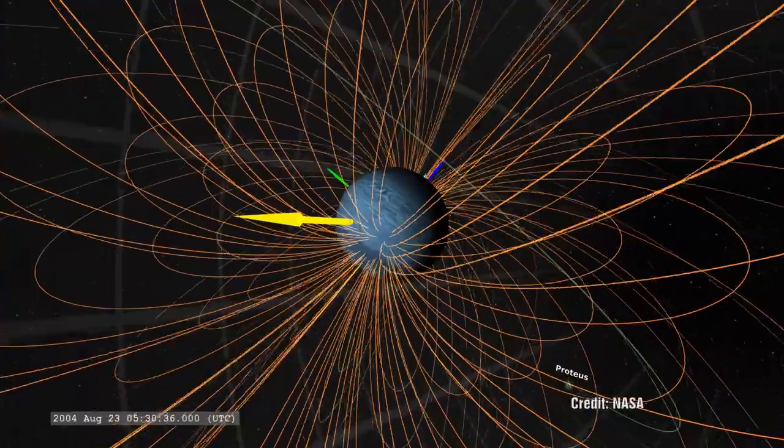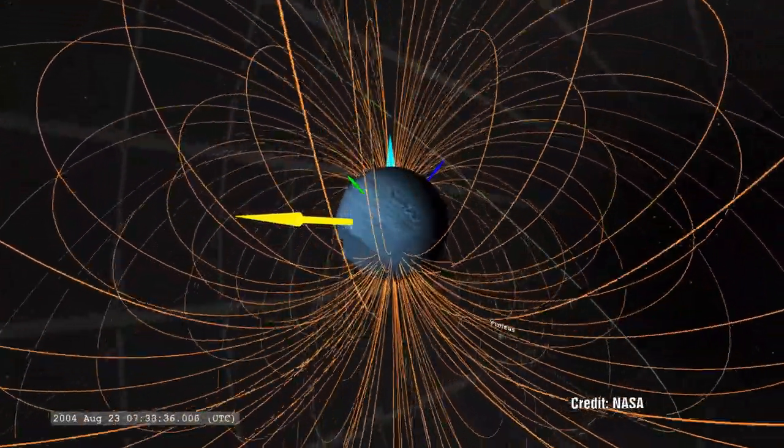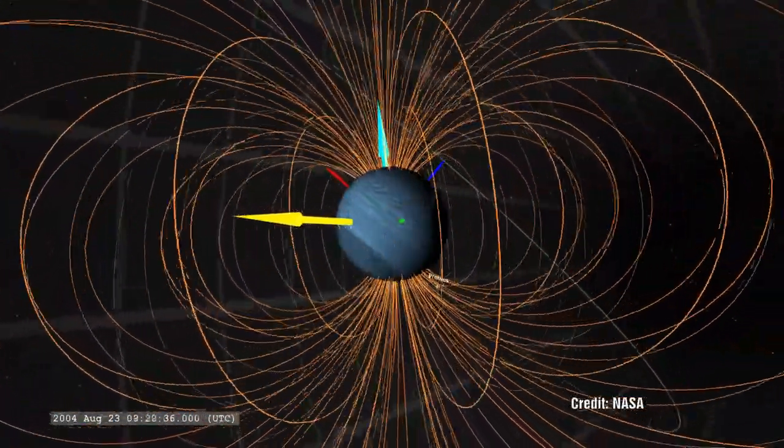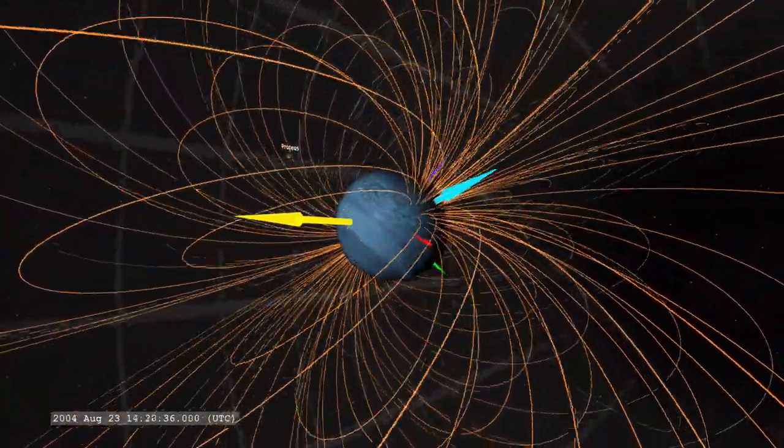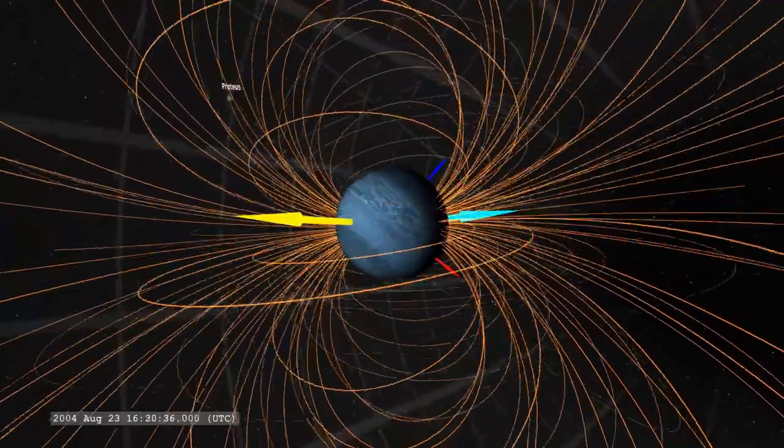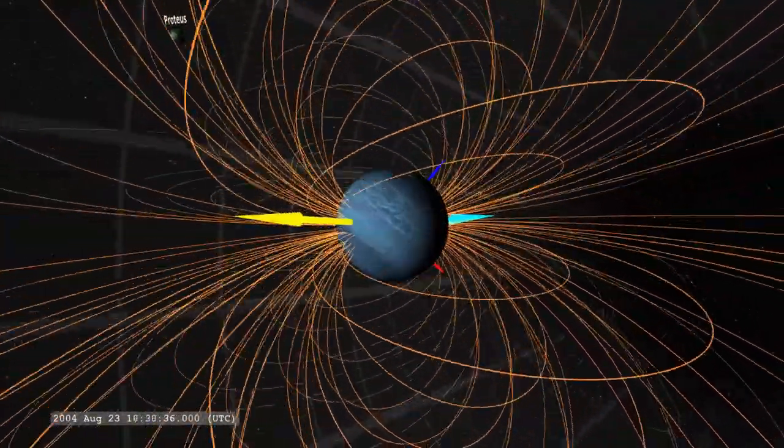Now, Neptune and Uranus are a little different due to the tilt of the magnetic field compared to its axis of rotation, and here the scientists think that the magnetic fields might be created by the flow of electric current in the salty oceans.